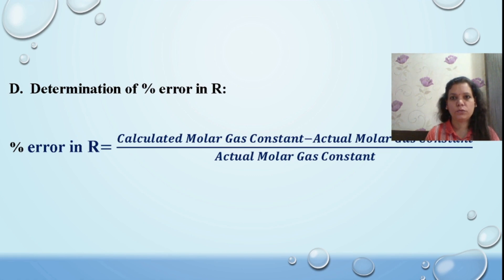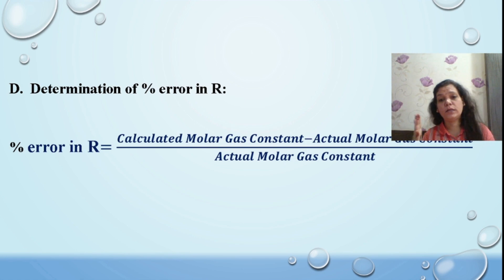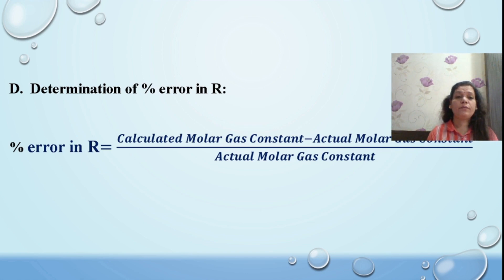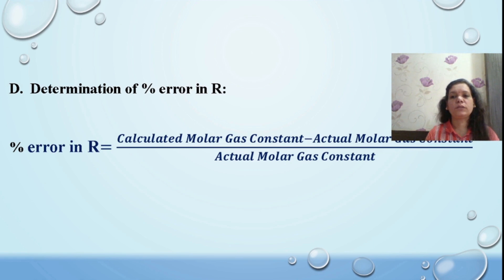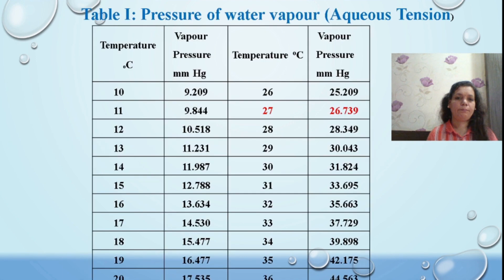If you want to know the error in your calculation, compare your calculated molar gas constant with the actual or theoretical values. Use the percent error equation: percent error = |calculated R − actual R| / actual R × 100. The actual molar gas constant values will be provided for all units.